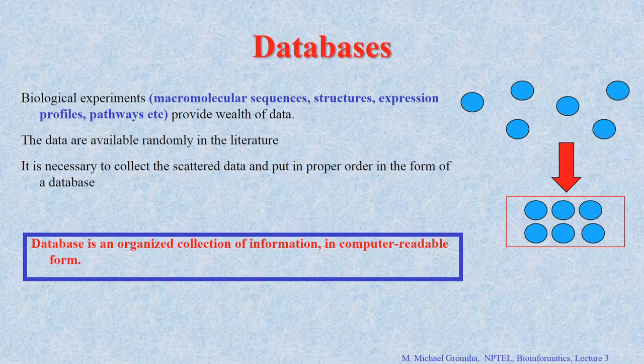The first one is databases. In this class we will mainly discuss about databases. What is a database? A structured collection of information in organized form. If you look into the literature there are many databases available. For example, if you use the general search, which one do you use? Google — you go to Google and type whatever information you want and then you get the information.